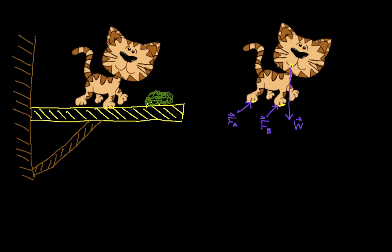What do we actually know about these forces? We know gravity is pointing down, and if we know the mass of the cat we can figure out that force. Without further analysis, we would not know the magnitude and direction of force A and force B. You'd be tempted to start applying statics or dynamics to figure out what these forces are, but you want to wait until you've actually drawn the free body diagram before thinking about statics or dynamics. Your goal at this stage is just to define the contact points and the forces at those points, as well as any forces due to gravity.